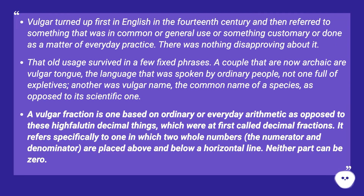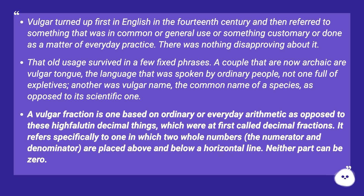A vulgar fraction is one based on ordinary or everyday arithmetic, as opposed to these highfalutin decimal things, which were at first called decimal fractions. It refers specifically to one in which two whole numbers — the numerator and denominator — are placed above and below a horizontal line. Neither part can be zero.